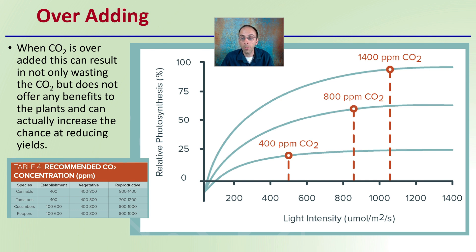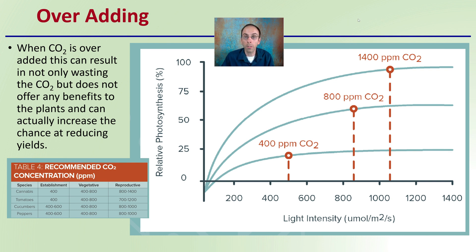Looking at 400 as the minimal and going up to maybe 1,400 and beyond, you can see all of the lines start to plateau and you're not really getting much of a yield benefit at those levels. So you have to take all these factors into consideration as you make your decision for your grow space.